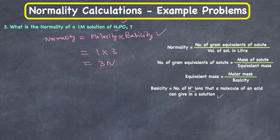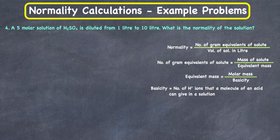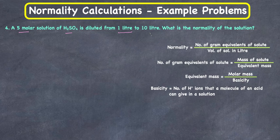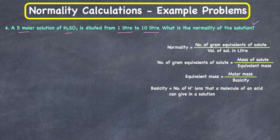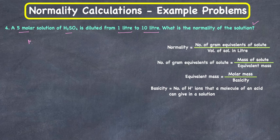Next example: we have a 5 molar solution diluted from 1 liter to 10 liters of solution, and they're asking us to calculate the normality. Essentially, one solution gets diluted so the volume increases, which means molarity changes and normality changes. We need to find the new normality.